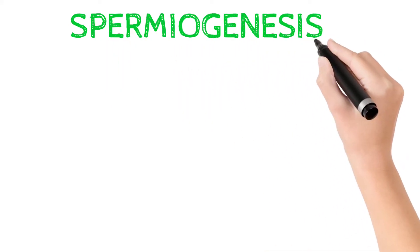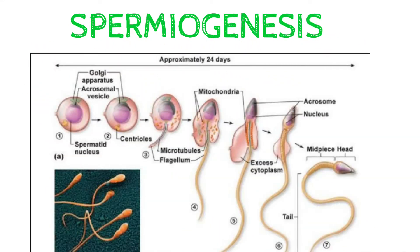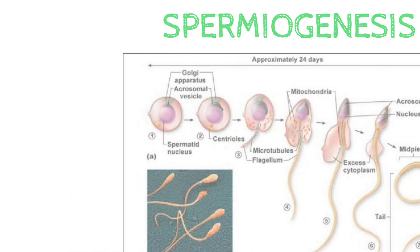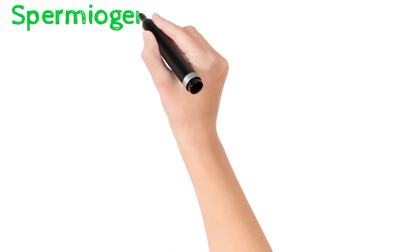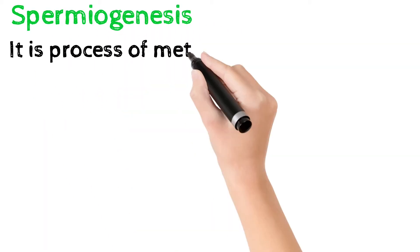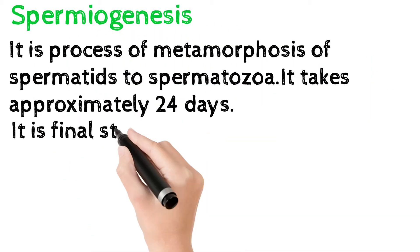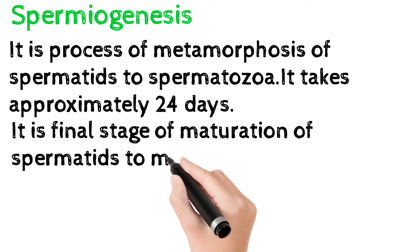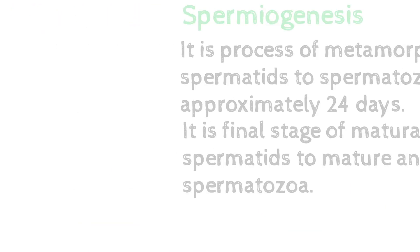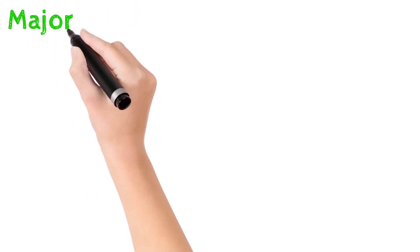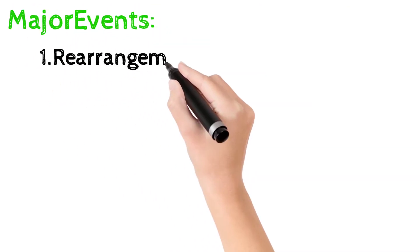Hi friends! Let's learn the process of spermiogenesis. It is a process of metamorphosis of spermatids to spermatozoa. It approximately takes 24 days. It is the final stage in maturation of spermatids into mature and motile spermatozoa.